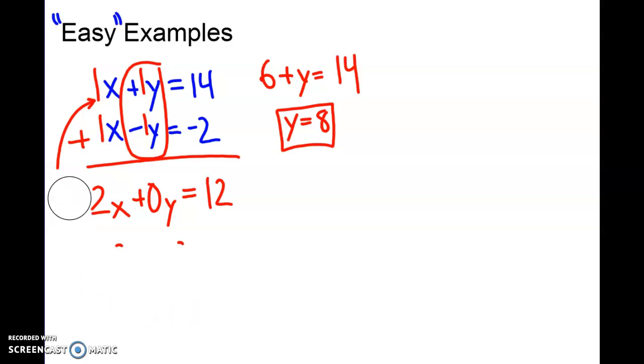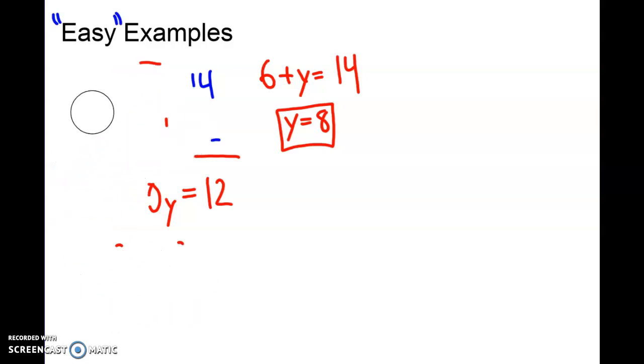Really quickly, let me show you another example. Same idea where we're going to have similar coefficients, but I just want to show you a different look. In this case, let's say we have negative 3x plus 2y equals negative 21, and then we have 3x minus 7y equals 36. We're going to take a look at this - the numbers are bigger, but it's still an easy example because I have same coefficients, different signs.